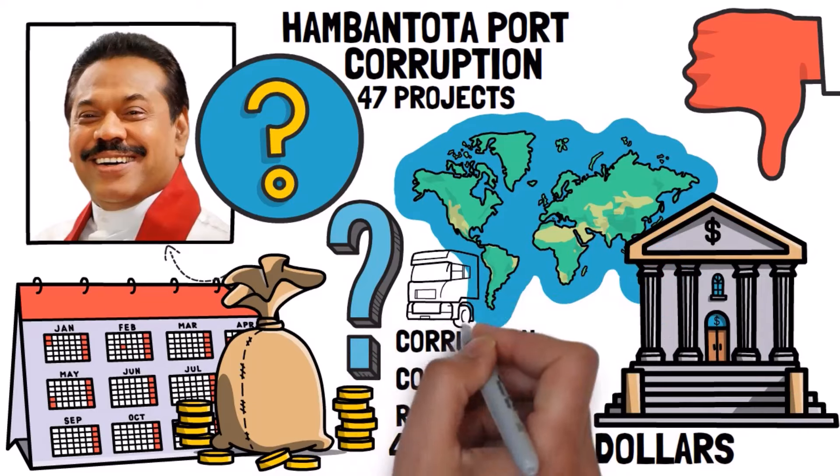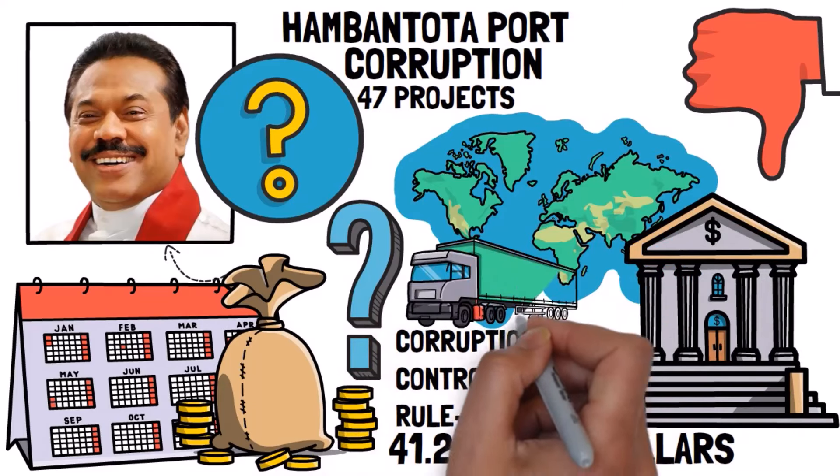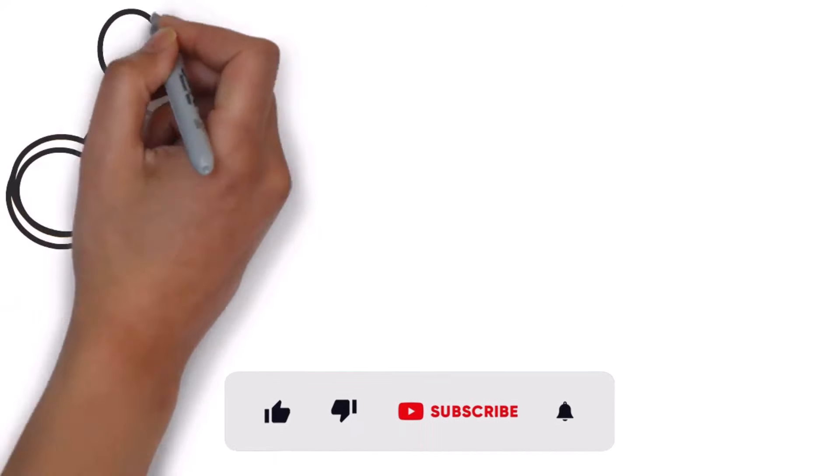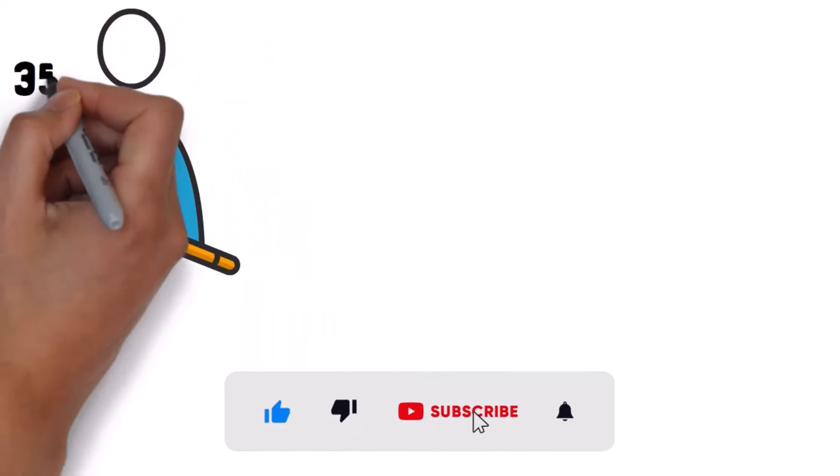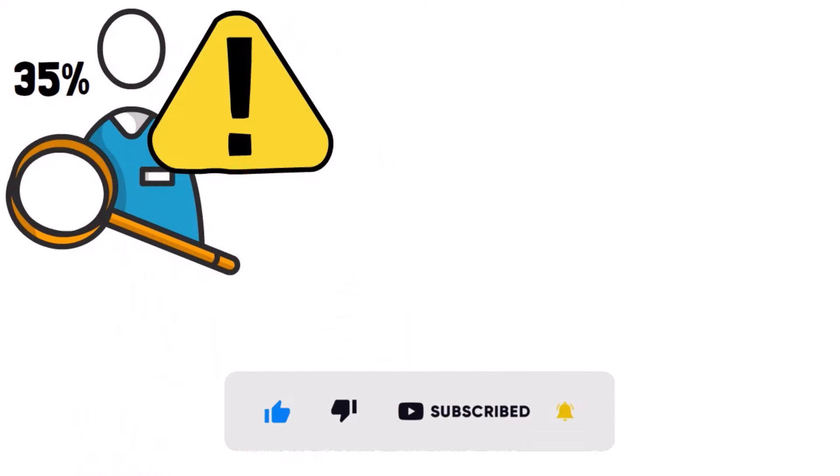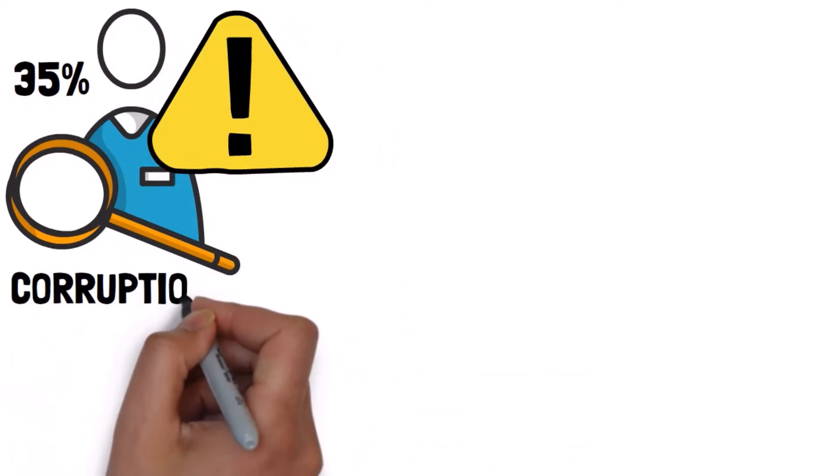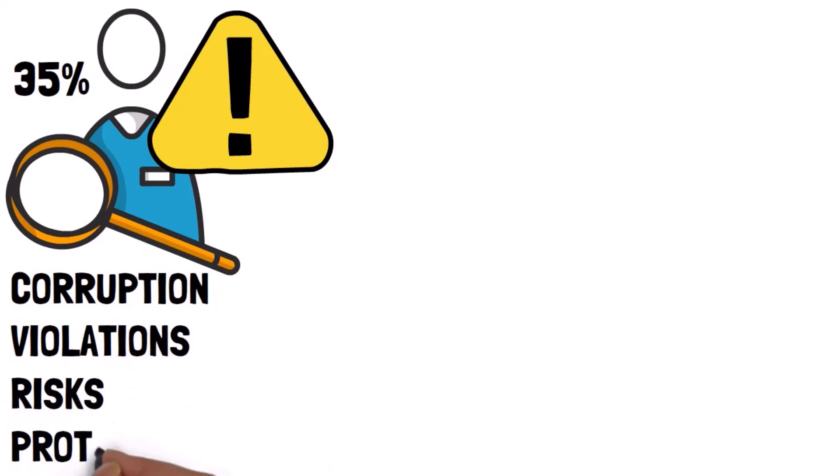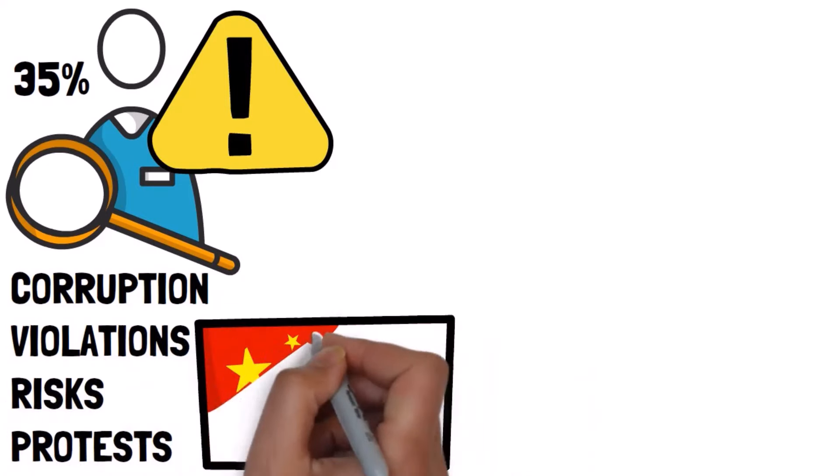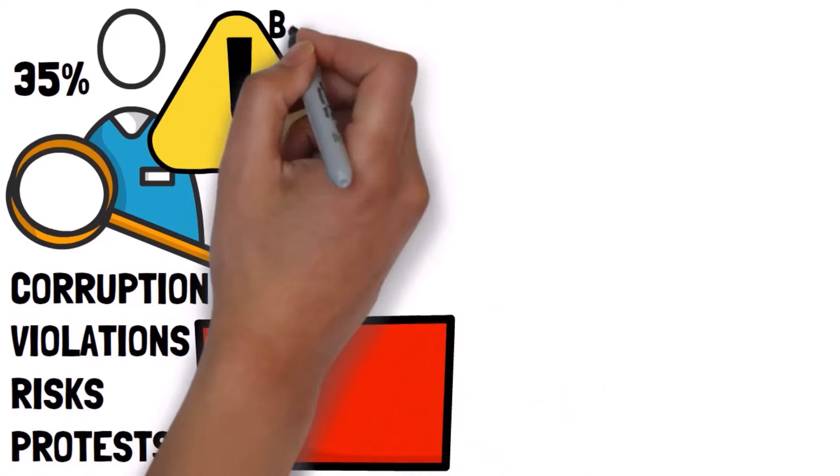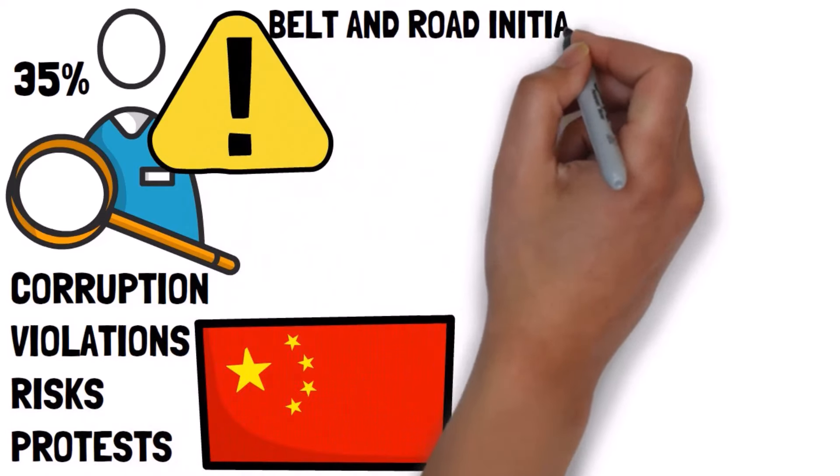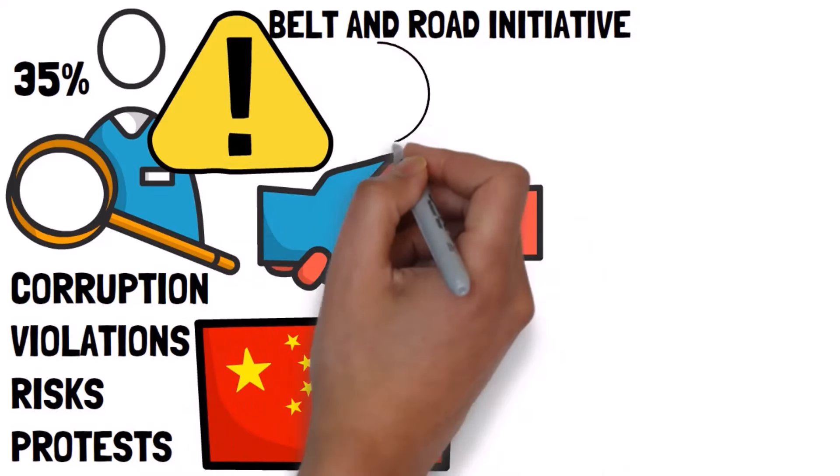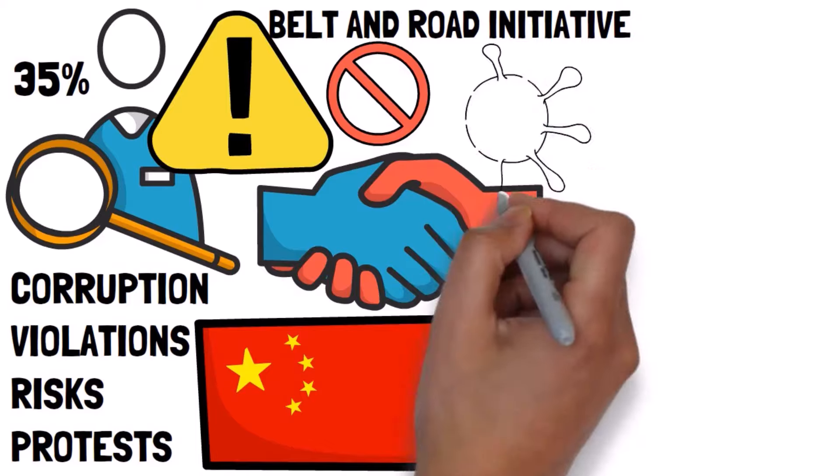When it comes to transport projects, bribes might make up 5 to 20 percent of the overall project costs. Researchers also found that 35 percent of all Belt and Road projects faced issues like corruption problems, violations of workers' rights, environmental risks and protests from the public. But here's the surprising part. China isn't really bothered by all of this, and that's been the trend with the Belt and Road Initiative. China promised less control and ended up not controlling anything at all.